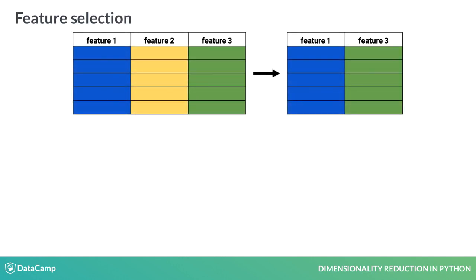When we apply a feature selection, we completely remove a feature and the information it holds from the dataset, such as the yellow column in this example. We try to minimize the information loss by removing features that are irrelevant or hold little or unique information, but this is not always possible.